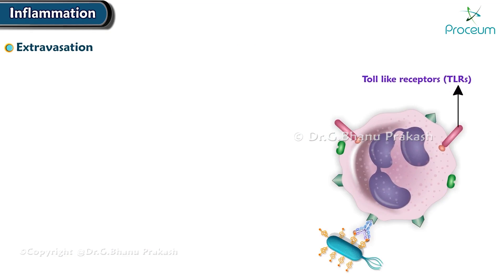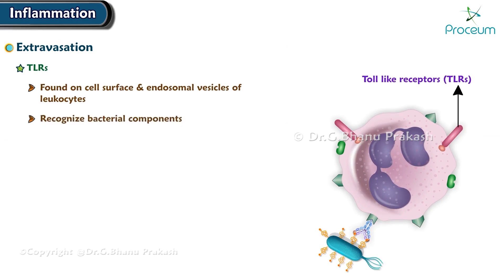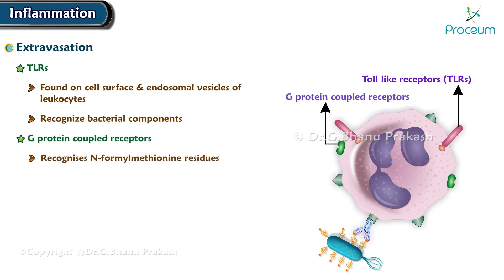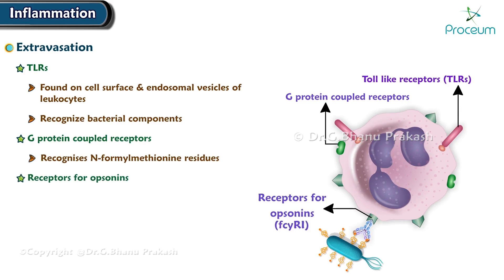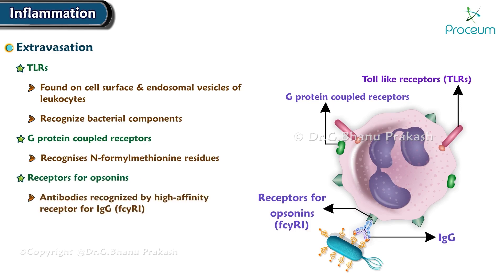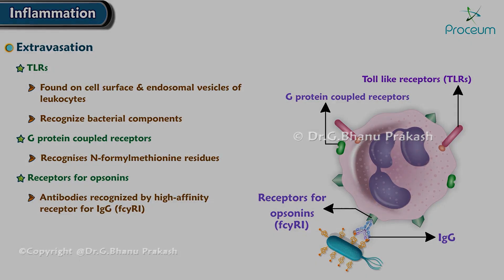We'll end this section by talking about the recognition of microbes and dead tissue. Toll-like receptors, or TLRs, are found on the cell surface and endosomal vesicles of leukocytes, and they recognize bacterial components. G-protein-coupled receptors recognize N-formylmethionine residues. Finally, there are receptors for opsonins. Immunoglobulin G antibodies are recognized by a high-affinity receptor called FcγRI.